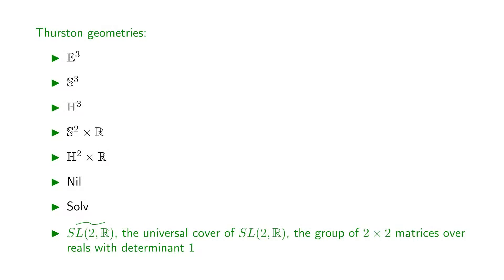The last geometry is denoted with this strange symbol, which reads as the universal cover of SL(2,R). SL(2,R) means the special linear group, that is the set of 2 times 2 matrices over reals of determinant 1. What does this mean?